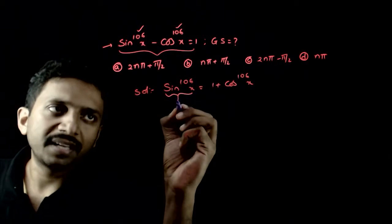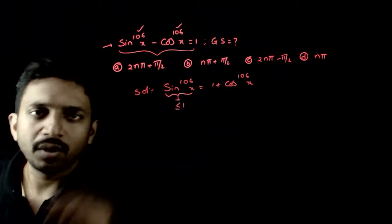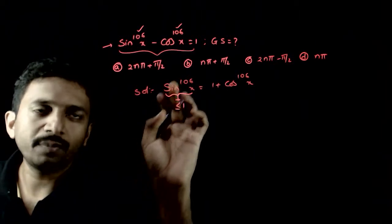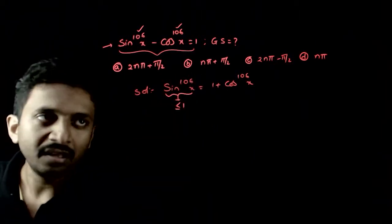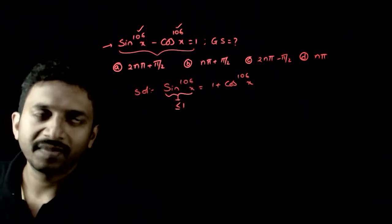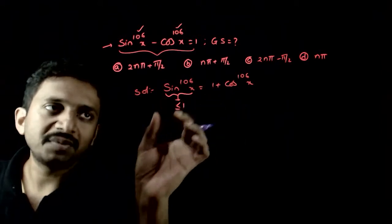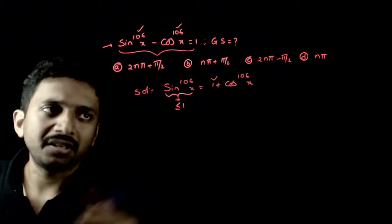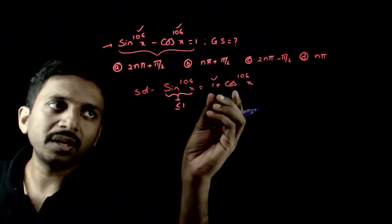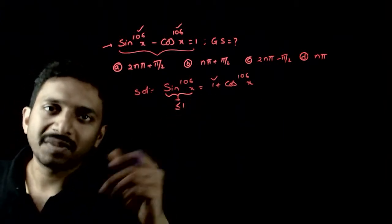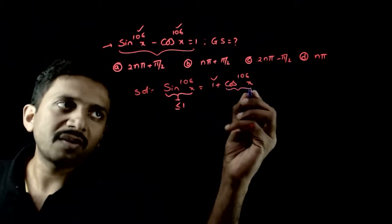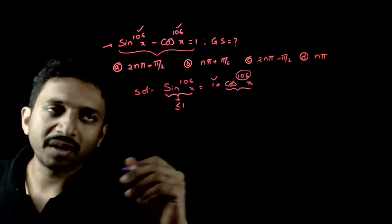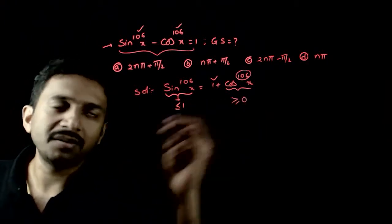Now, sin power 106x is always less than or equal to 1. After raising to power 106, it is still less than or equal to 1. But this equation says it has to be 1 plus something — it must be greater than 1. And cos power 106x is always positive when the power is even, so it is always a positive number, always greater than or equal to 0.